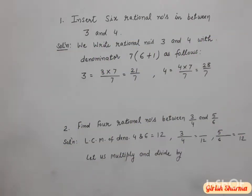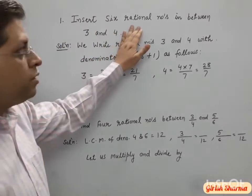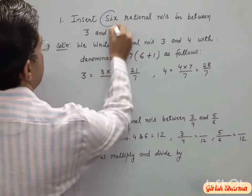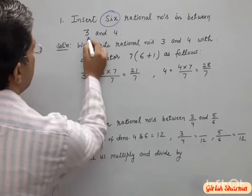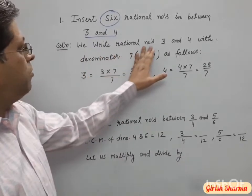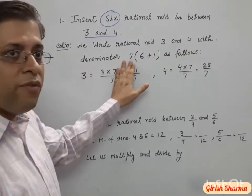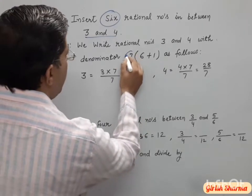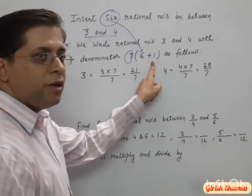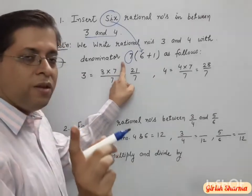The next problem is: insert 6 rational numbers between 3 and 4. To do that, we write 3 and 4 with denominator 7. I am taking 7 here because I have to insert 6 numbers — if you add plus one you will get 7.